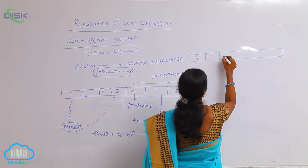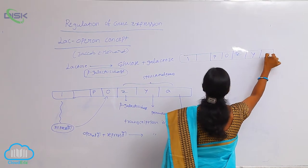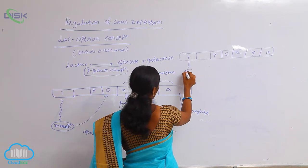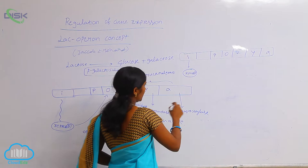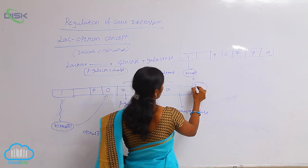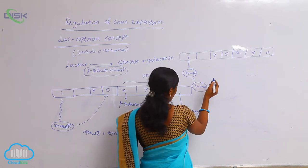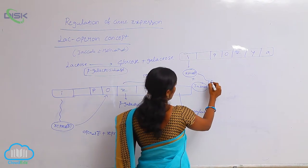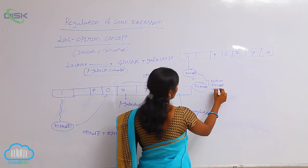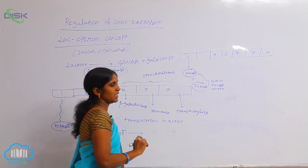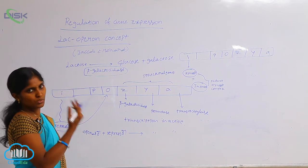The regulatory gene produces a protein — the regulatory protein called repressor. When the repressor is joined with the inducer, which is lactose, one complex is produced: the inducer-repressor complex. The function of the inducer when bound to the repressor is to inhibit the activity of the repressor, preventing it from joining with the operator region.